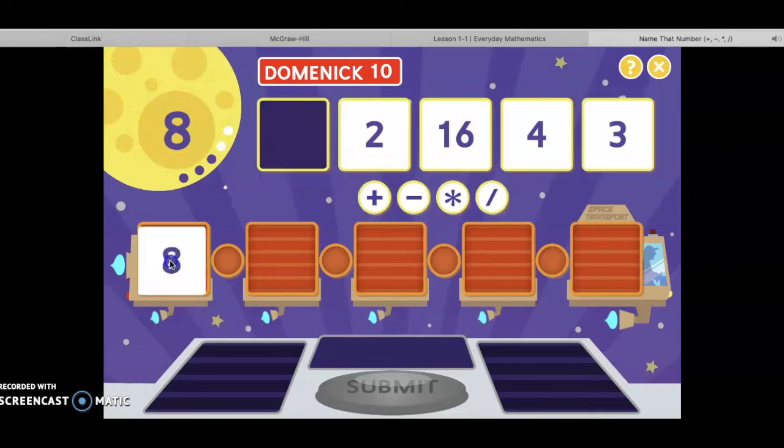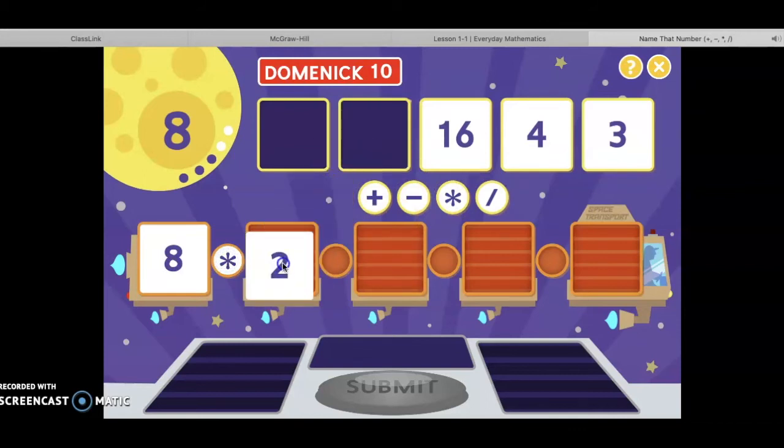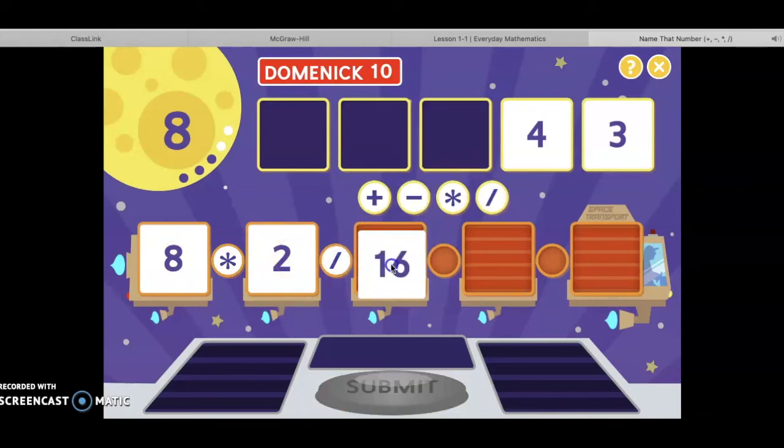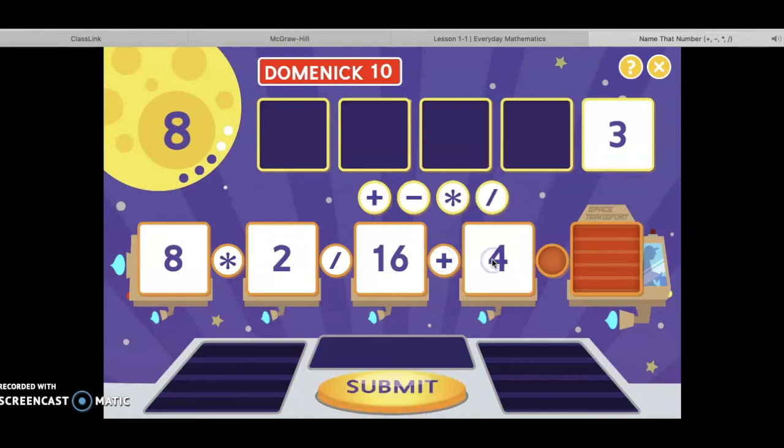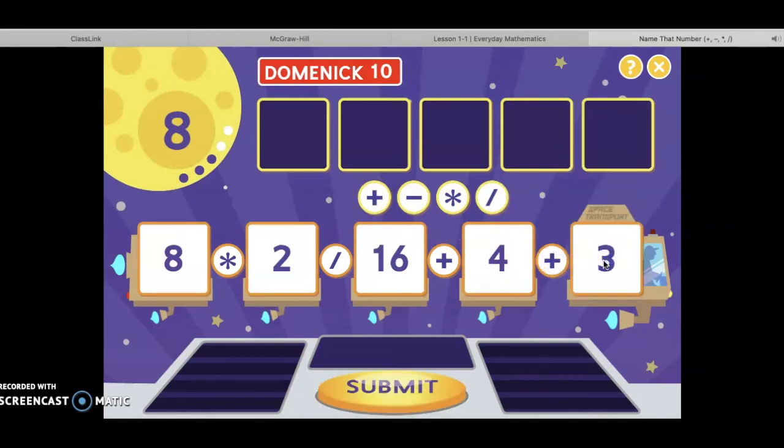So let's see. Eight times two, that's going to equal sixteen. Sixteen divided by sixteen equals one, plus four equals five, plus three will equal eight.